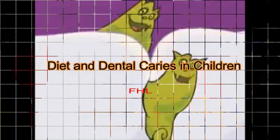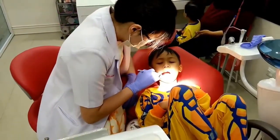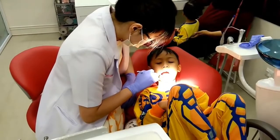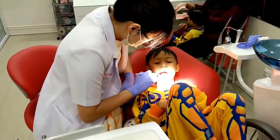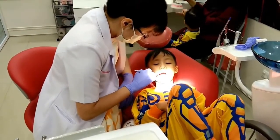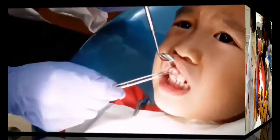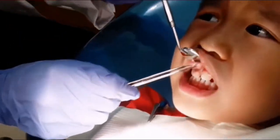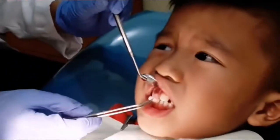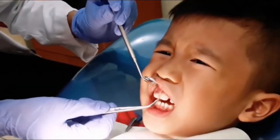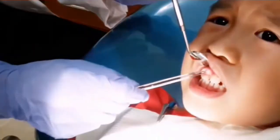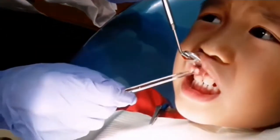Diet and dental caries in children: when discussing dental caries with respect to a child's diet, you need to distinguish between the truly nutritional effects on the formation and makeup of good healthy teeth, and the environmental effects — i.e., the metabolic behavior of the bacteria on the surface of the teeth from dietary components.